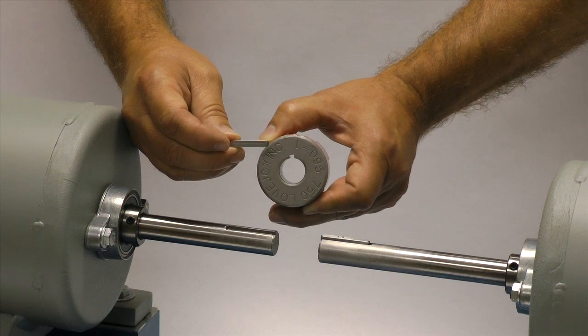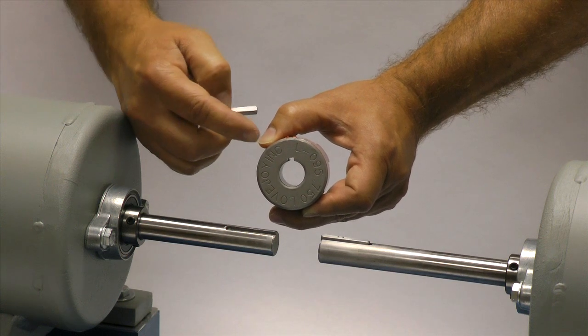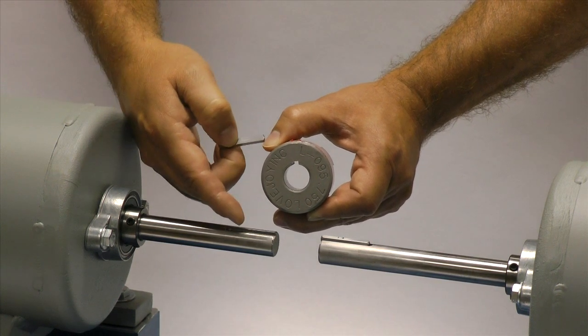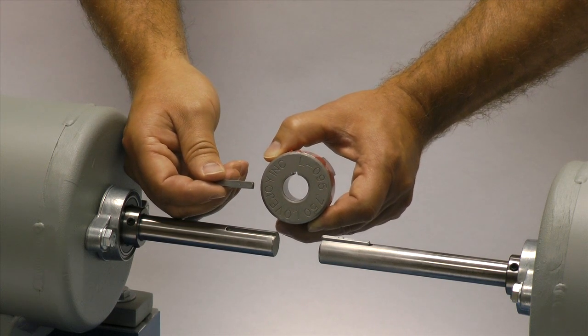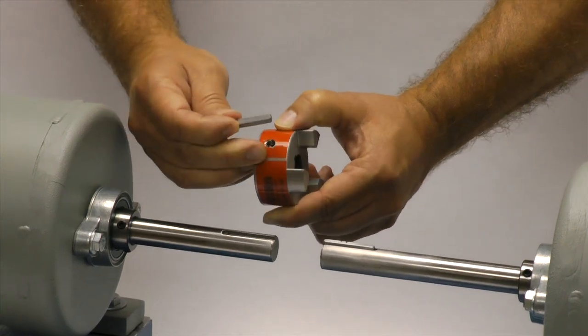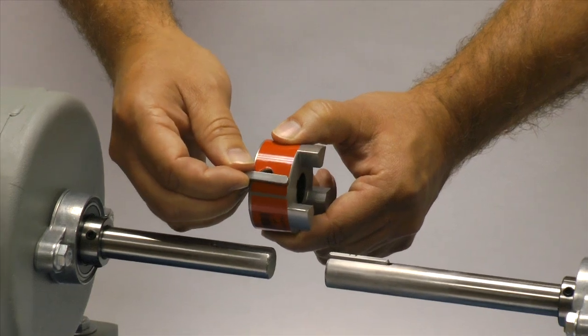If the shaft and the hub both have keyways, make sure you have the appropriate key ready to use when performing this installation. Ideally, the key should be the same length or slightly longer than the hub to transmit the maximum allowable torque.